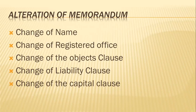Change of name: a company can change its name. For this purpose, it must first pass a special resolution and then obtain approval of the central government in writing. However, no such approval is necessary for merely including or deleting the word 'private' consequent on the conversion of a public company into a private company and vice versa. The registrar shall enter the new name in place of the former name and shall issue a fresh certificate of incorporation. The change of name shall be complete and effective only on the issue of such a certificate. The rights and obligations of a company will not be affected on the change of its name, as per Section 23 of the Companies Act of 1956.